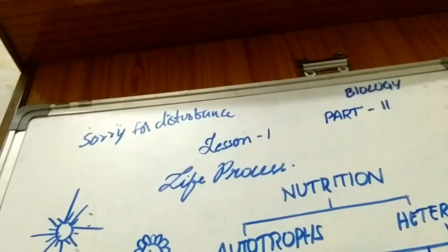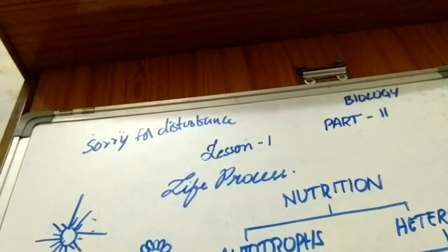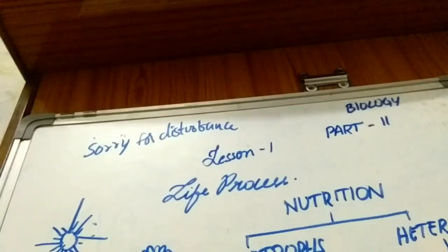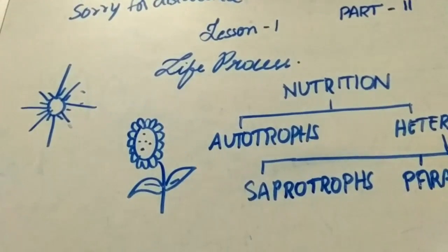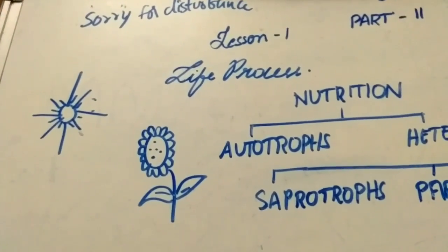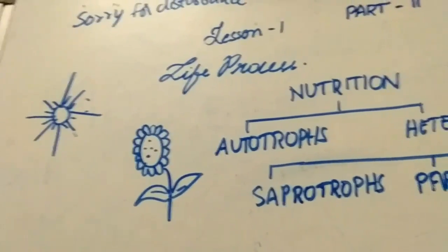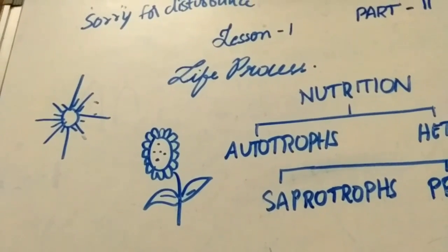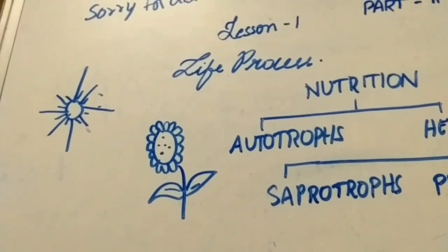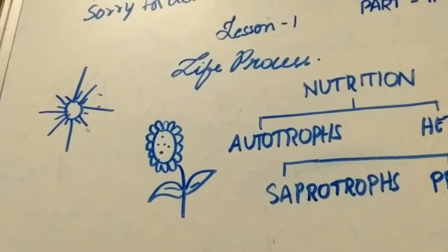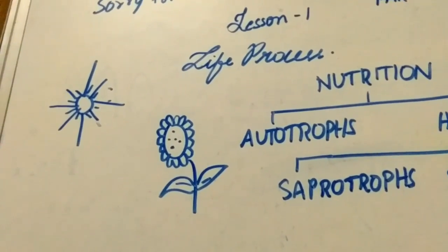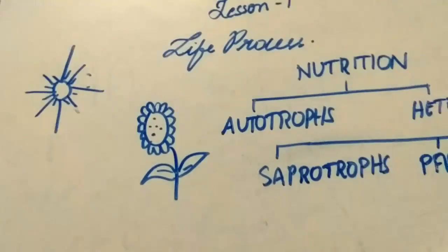In holozoic nutrition, animals take complex organic food material into the body by the process of ingestion. The ingested food is digested and then absorbed by body cells. In holozoic nutrition, the process follows a particular series of steps, and the nutrients and essential food are absorbed by body cells for growth and development.